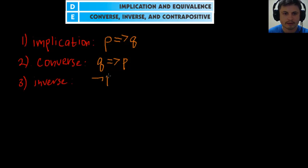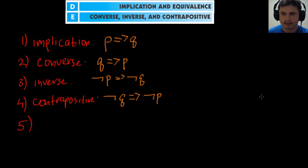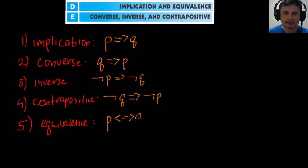Contrapositive is: if not Q then not P. And finally, number five is equivalence. Equivalence is written with a double-headed arrow and means 'Q if and only if P.' So that is what we call equivalence.